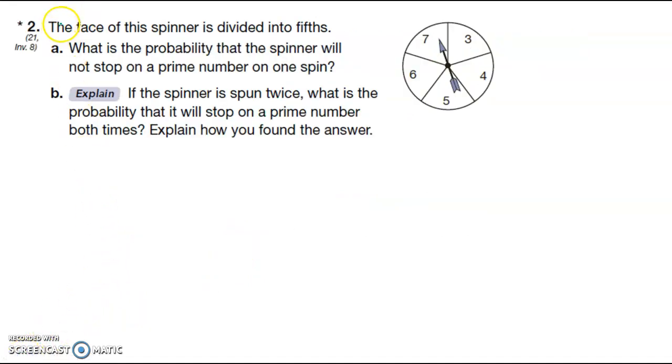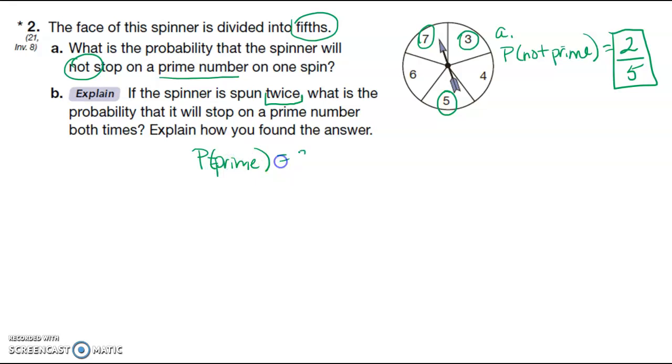Number two, the face of the spinner is divided into fifths. What is the probability the spinner will not stop on a prime number? I know 3 is prime, 5 is prime, and 7 is prime, so I want the probability of not prime, of which there are 2 out of 5, so that's my answer to A. If the spinner is spun twice, what is the probability that it will stop on a prime number both times? So probability of prime is 3 fifths, and then if you're going to do it twice, that's the probability.